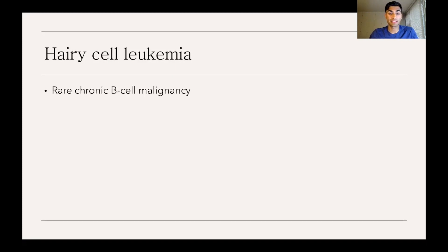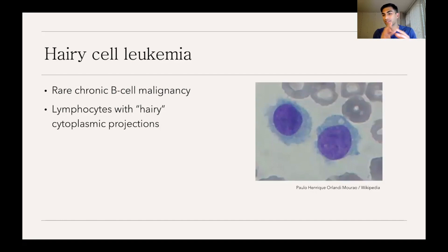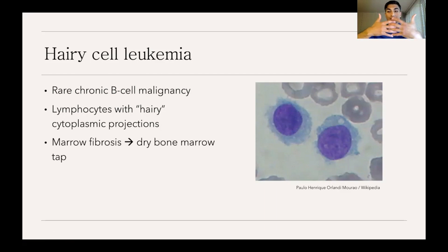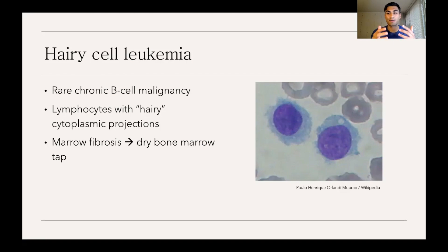There's a special type of CLL called hairy cell leukemia — a chronic B cell malignancy characterized by lymphocytes with hairy cytoplasmic projections. These hairy cells can interlock with each other and cause fibrosis within the bone marrow. When you attempt a bone marrow biopsy, you'll get what's called a dry tap — nothing comes out — because the fibrosis from interlocked hairy cells takes up all the space. Almost all cases of hairy cell leukemia are driven by a BRAF mutation.